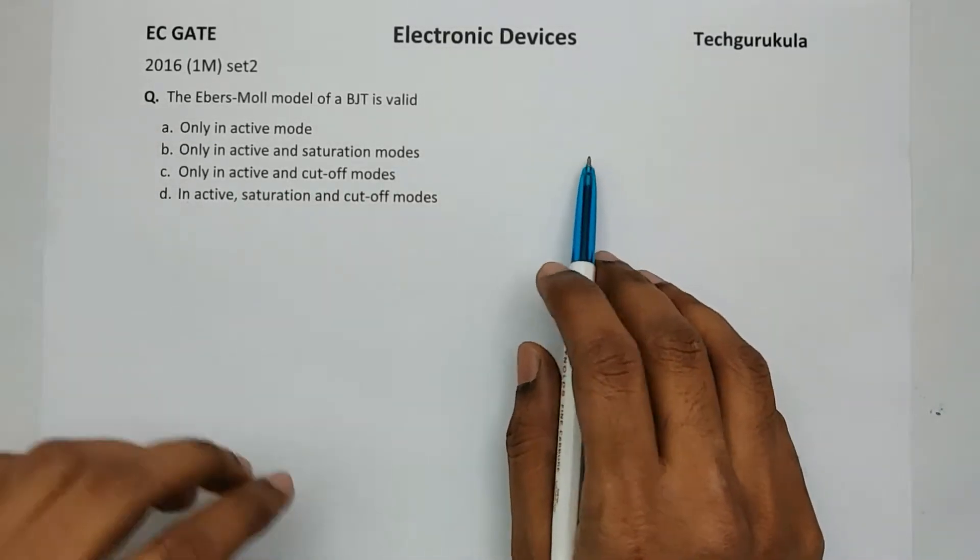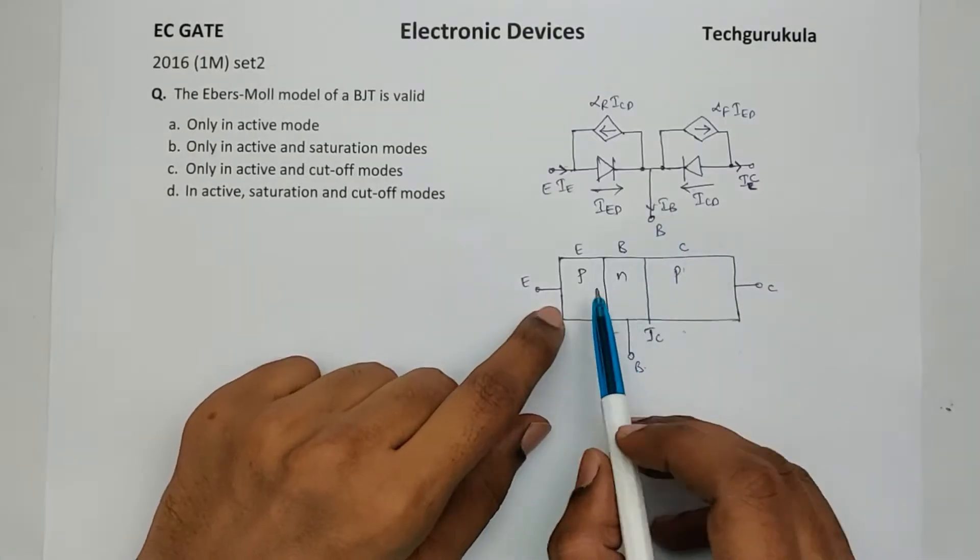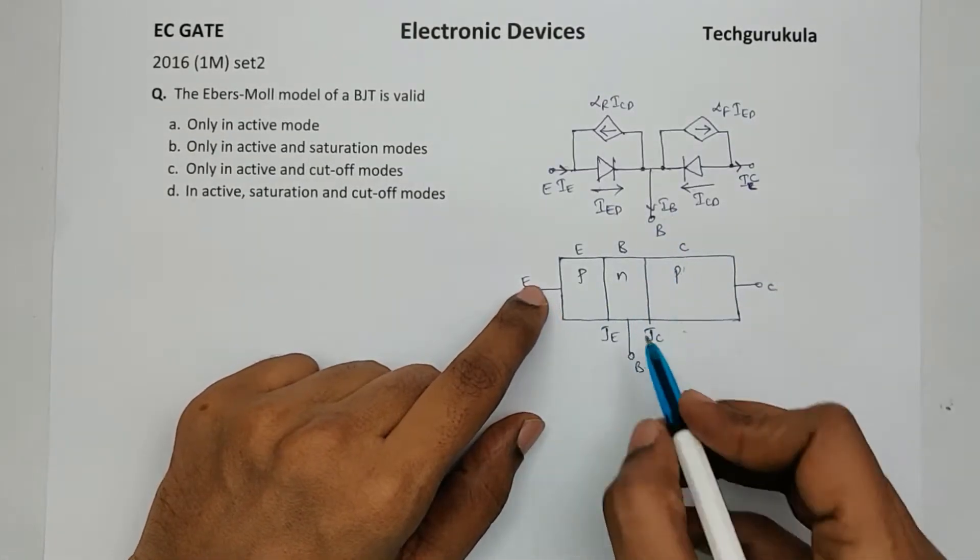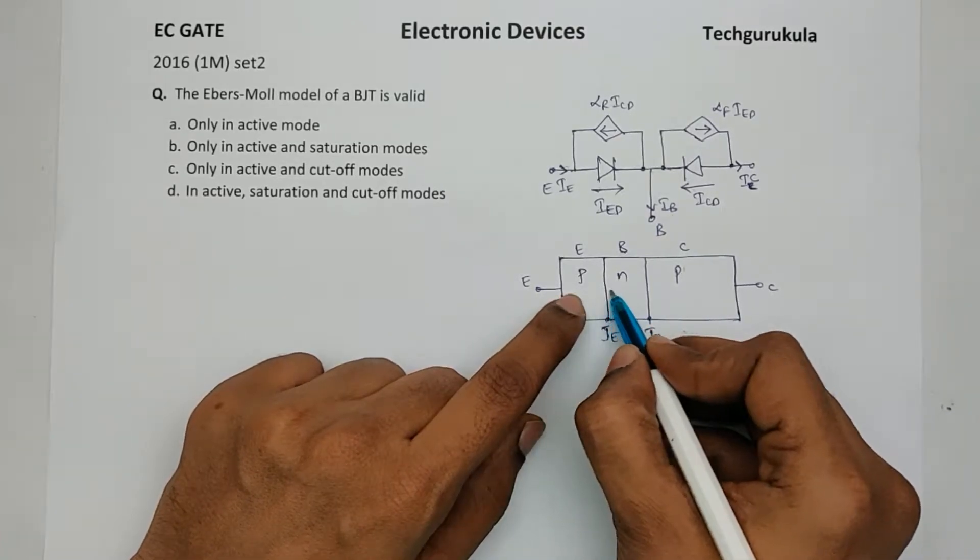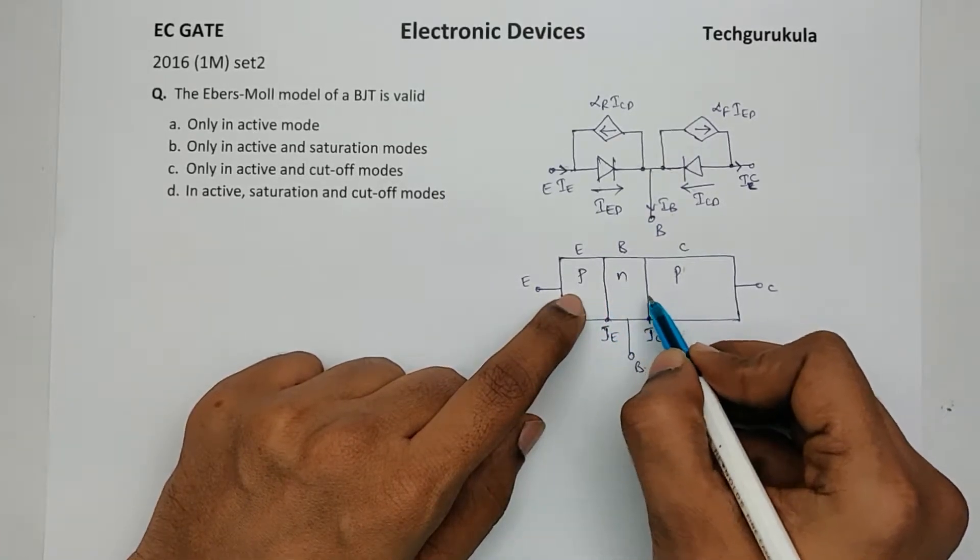So the Ebers-Moll model is given like this, where I'm taking here a PNP transistor in which we have emitter junction here and collector junction here. This is one PN junction and this is another PN junction.